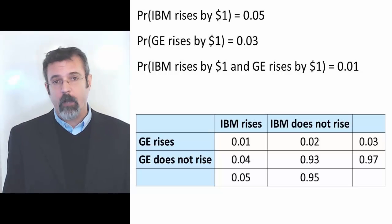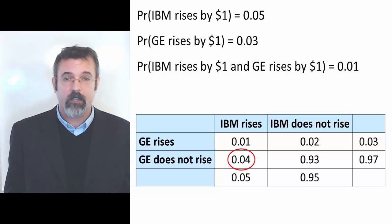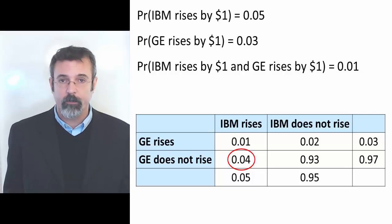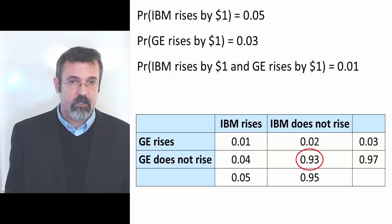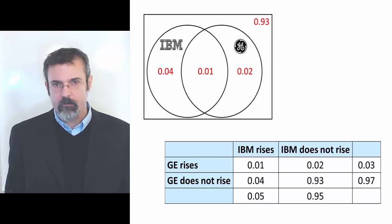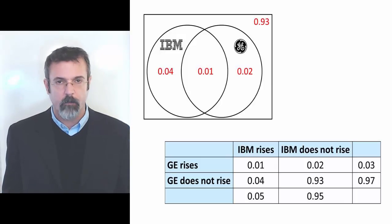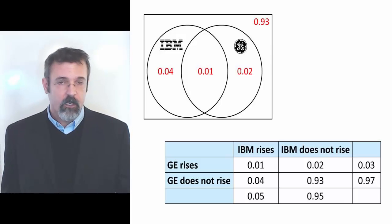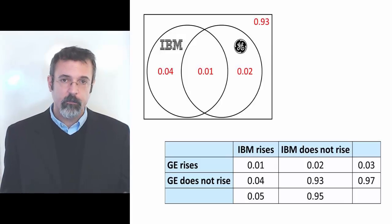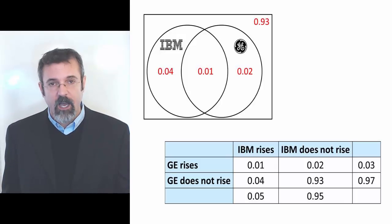For example, the probability that IBM stock rises and GE stock does not is 4%. The probability that neither stock rises is 93%. Remember that Venn diagrams and probability tables are not designed to solve probability problems — they are designed to organize probability problems. The first step in completing the problem is organizing it. Once organized, you can then use the organized information to answer whatever problem you face.